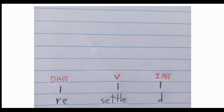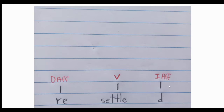If you have a noun, you will write 'N'; if you have an adjective, you will write 'ADJ'; if you have an adverb, you will write 'ADV'. It depends on what you have in the word. In this case we have a verb, so that's why I write 'V' here. And '-ed' is an inflectional affix, so I write 'I+AFF'.